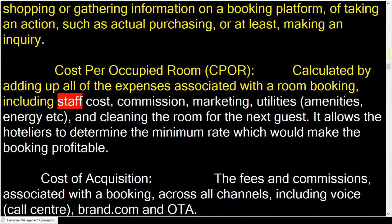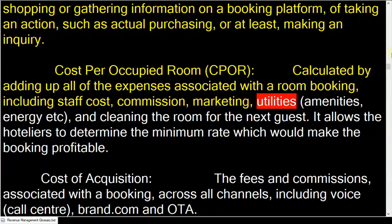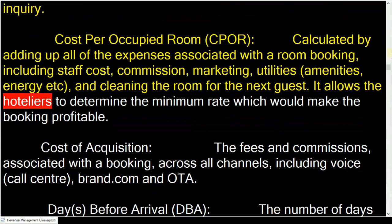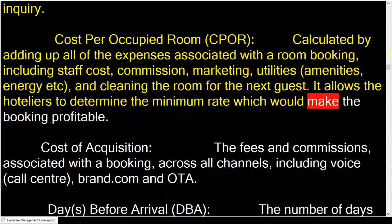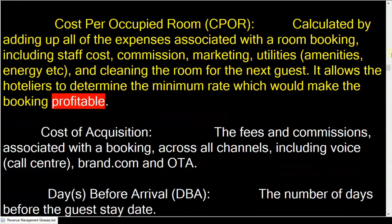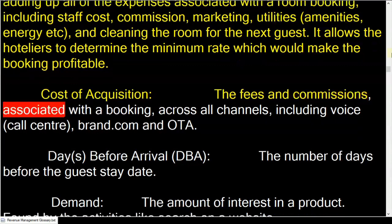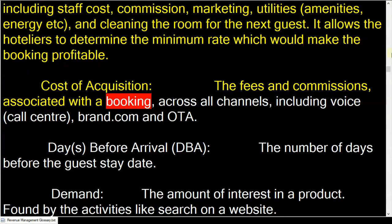Cost per occupied room: calculated by adding up all of the expenses associated with a room booking, including staff cost, commission, marketing, utilities, and cleaning the room for the next guest. It allows hoteliers to determine the minimum rate which would make the booking profitable.